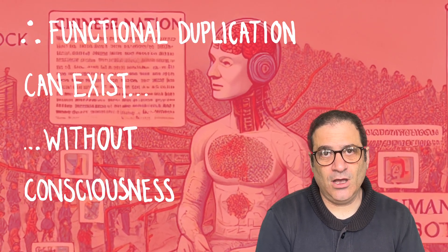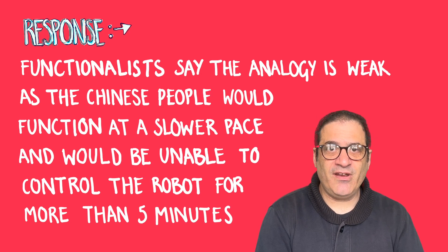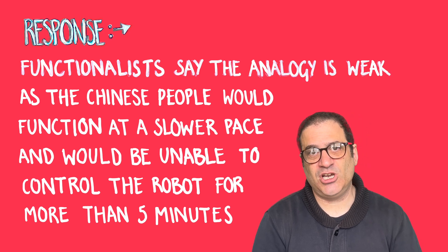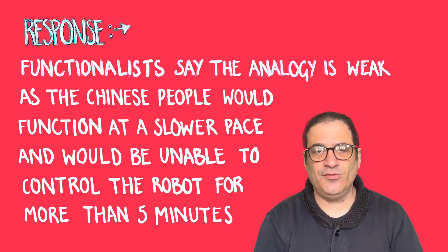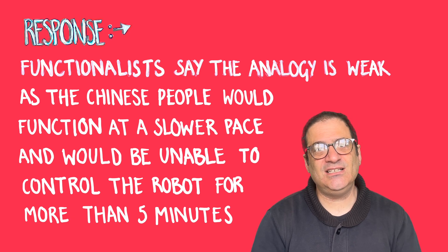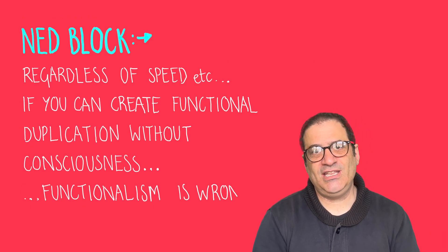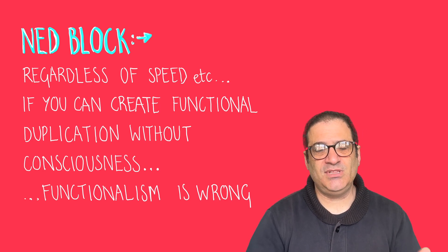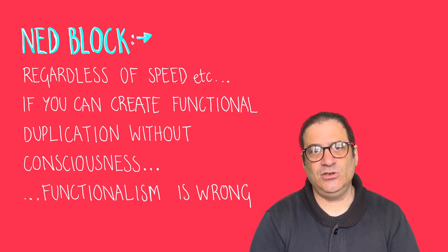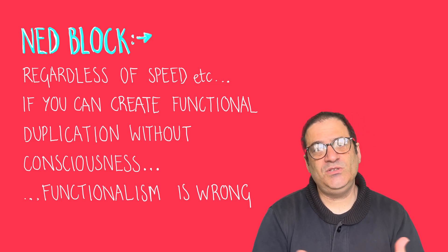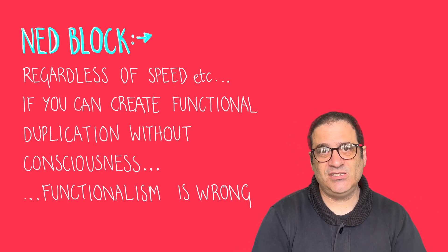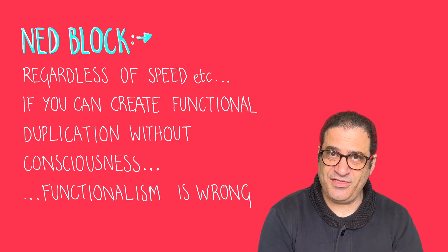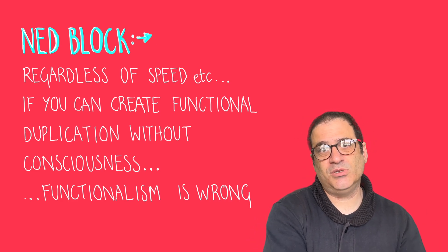The initial response to Ned Block's example was that this wouldn't really be a good replication of human behaviour because the people of China would behave much more slowly and only respond in a much slower way, so they wouldn't really be able to replicate the speed and style of human behaviour. Ned Block's response is that it doesn't really matter — it's not about speed or technical problems, it's the principle. The principle that even if for only five minutes there could be replication of functions with no consciousness would mean that functionalism is wrong. And of course, as we know today, robots are so sophisticated that we effectively have something very close to human functions, but we think — and this is part of the debate — that these computers and robots are not conscious.